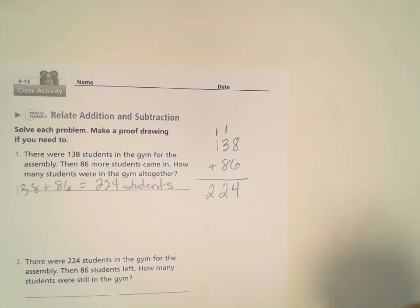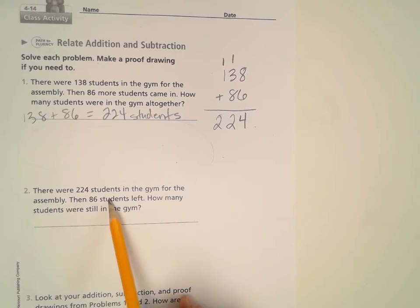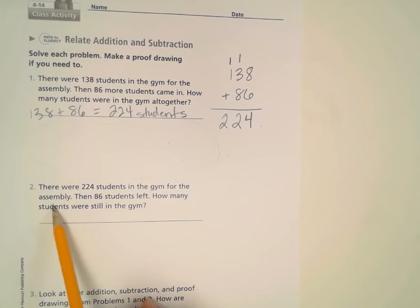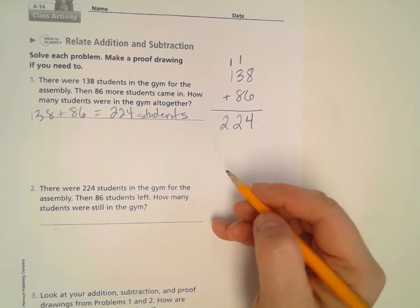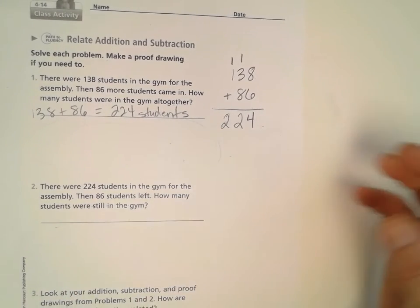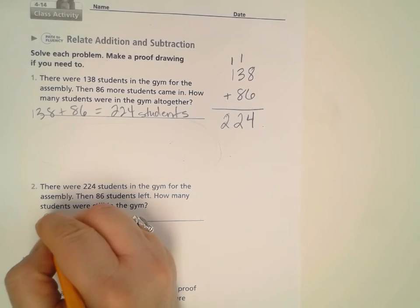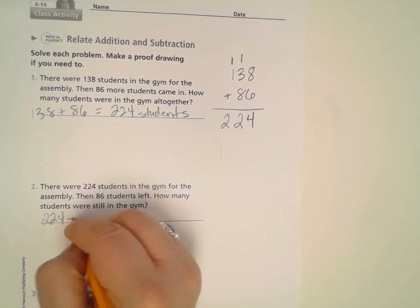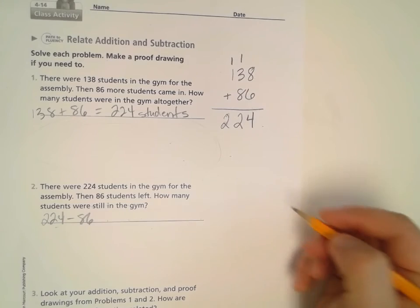Okay, so now I'm going to think about this problem here. There were 224 students in the gym for the assembly. Then 86 students left. How many students were still in the gym? Okay, so some students are leaving. So they're going away. So that's subtraction. 224 minus 86.